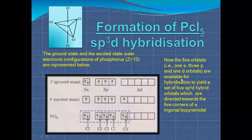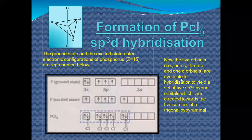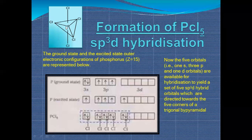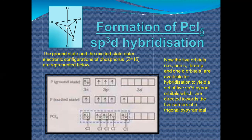The total number of hybrid orbitals is five (1s + 3p + 1d = 5). These five hybrid orbitals are directed towards the five corners, and that is why the shape is triangular bipyramidal. All the chlorine atoms are directed towards the corners because of repulsion from bond pair electrons. So in sp3d hybridization, the shape is triangular bipyramidal.